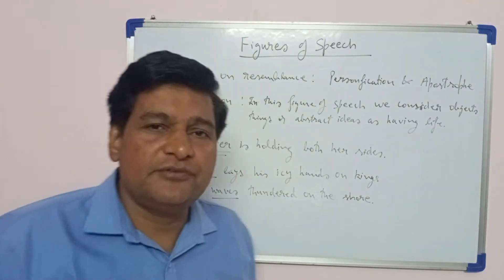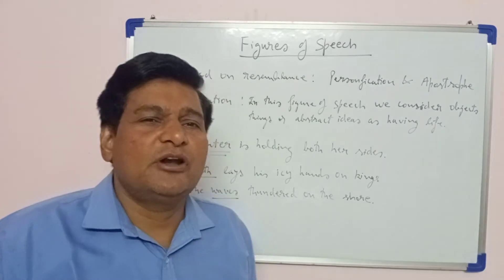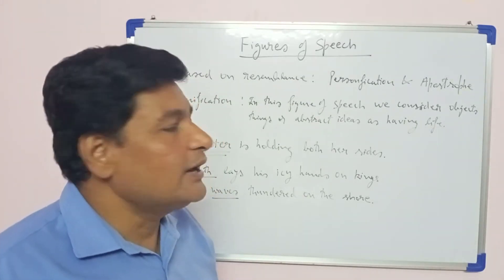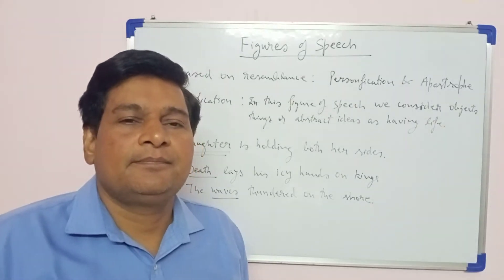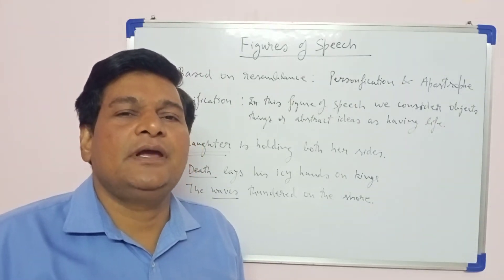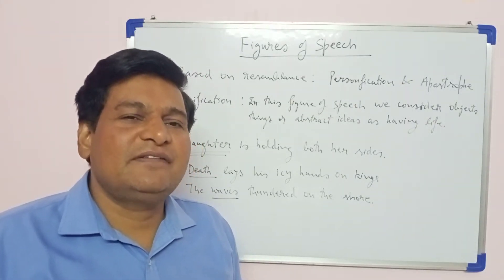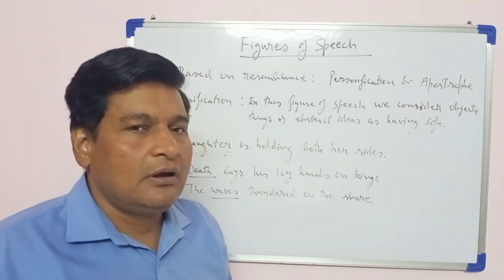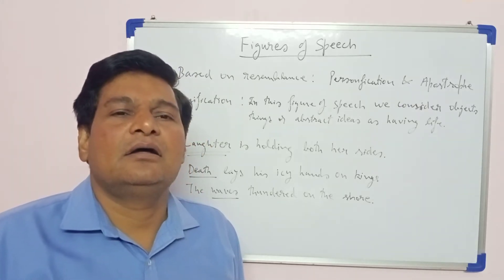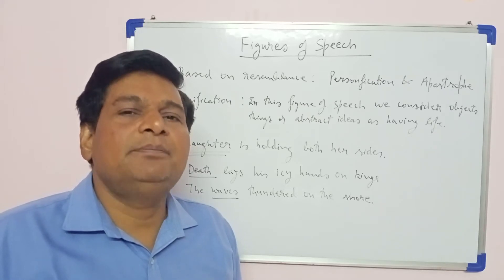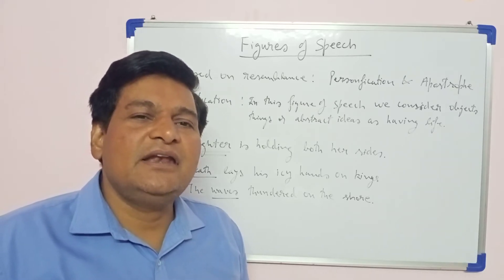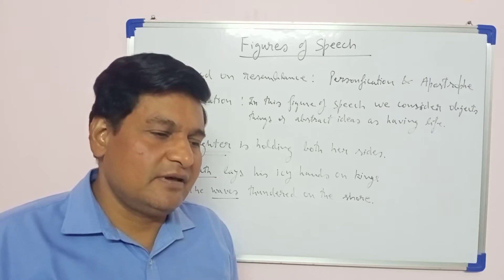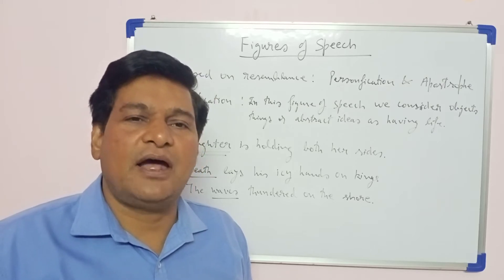I hope you have understood personification. Now we will understand the next figure of speech, which is apostrophe. Apostrophe is a special form of personification. Here we address the dead people, the inanimate objects, and abstract ideas as though they are having life.